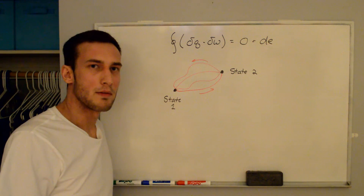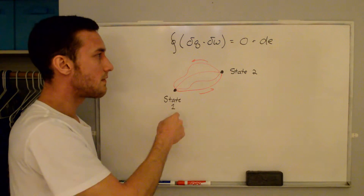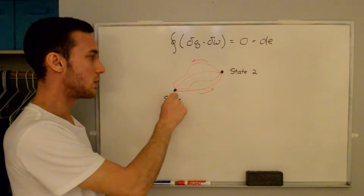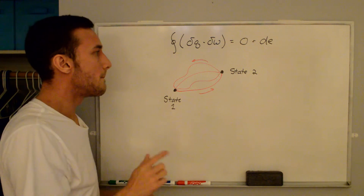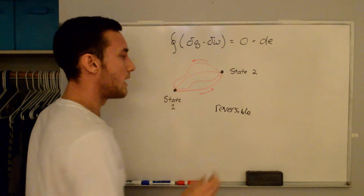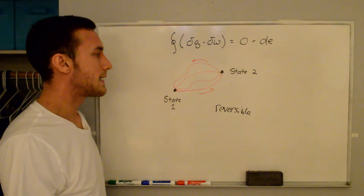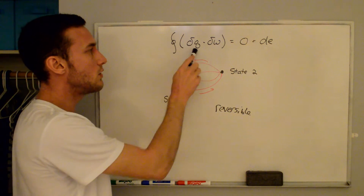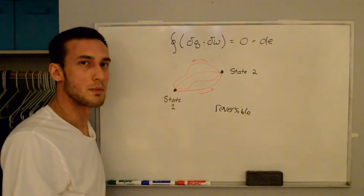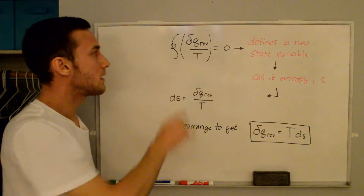As foreshadowing for the combined first and second law, consider the different paths from state one to state two. State variables don't depend on the path, so we can take any of infinitely many paths. If we specify a certain path and call it reversible — meaning no dissipative losses such as friction — then maybe we can find expressions for δQ and δW along a reversible process that gives us these values purely in terms of state variables, which we can then plug into the first law.